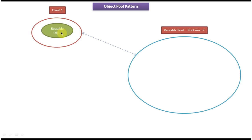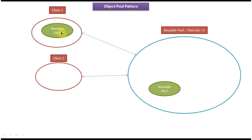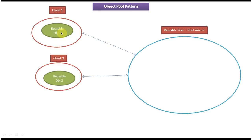After some point of time client 2 comes and wants a reusable object from the reusable pool. Client 2 sends a request to the reusable pool. The reusable pool checks if any reusable object is available — now no reusable object is available. It checks the pool size, which is 2. Since already one object was created and returned to client 1, it can create another one. So the reusable pool creates reusable object 2 and returns it to client 2. Now both client 1 and client 2 are using reusable object 1 and reusable object 2 respectively.